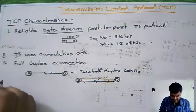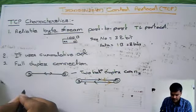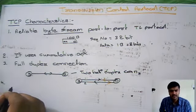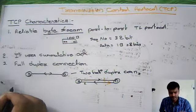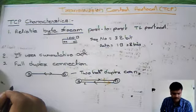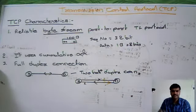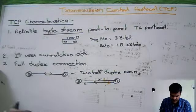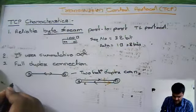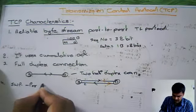The next characteristic: TCP is in the transport layer. In the transport layer, flow control is one of the responsibilities. To control this flow, TCP uses the sliding window protocol for flow control.